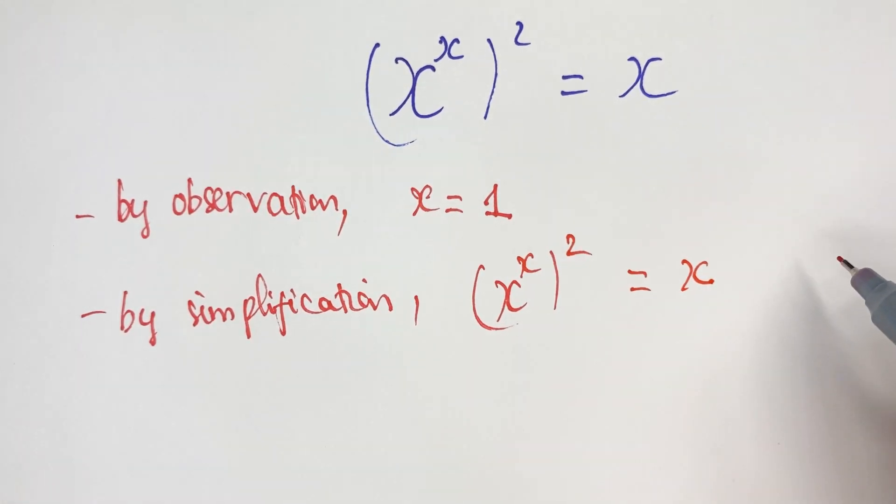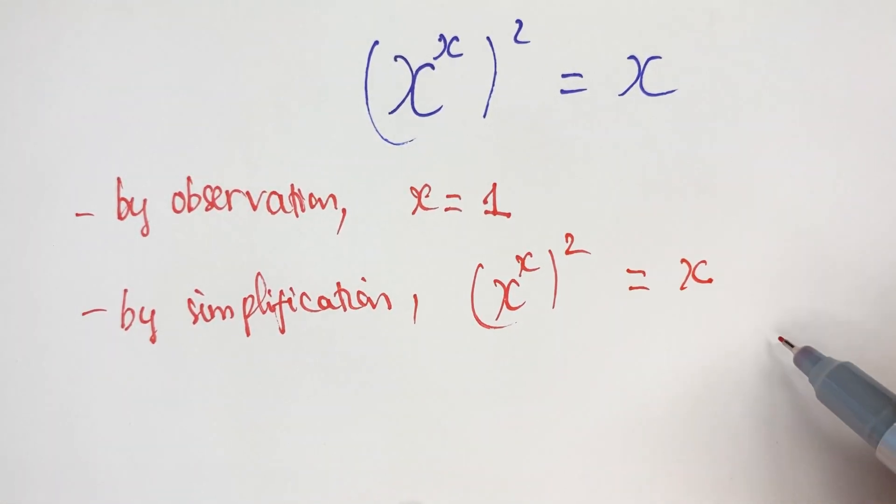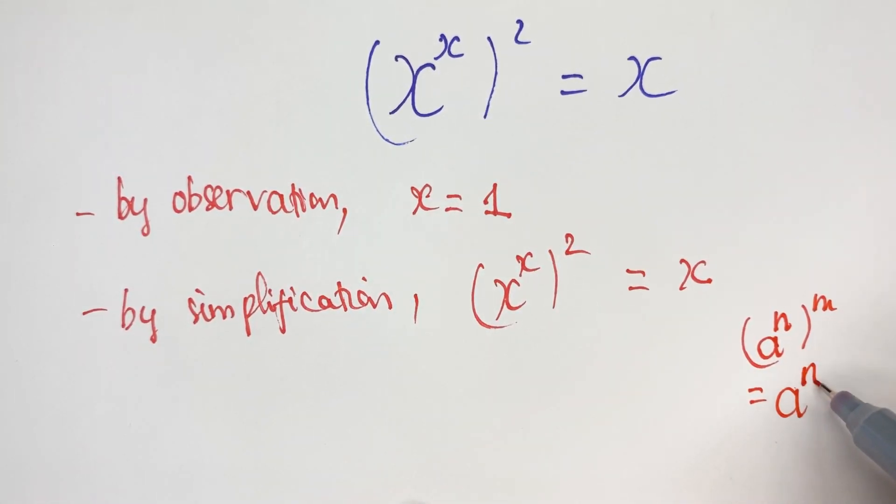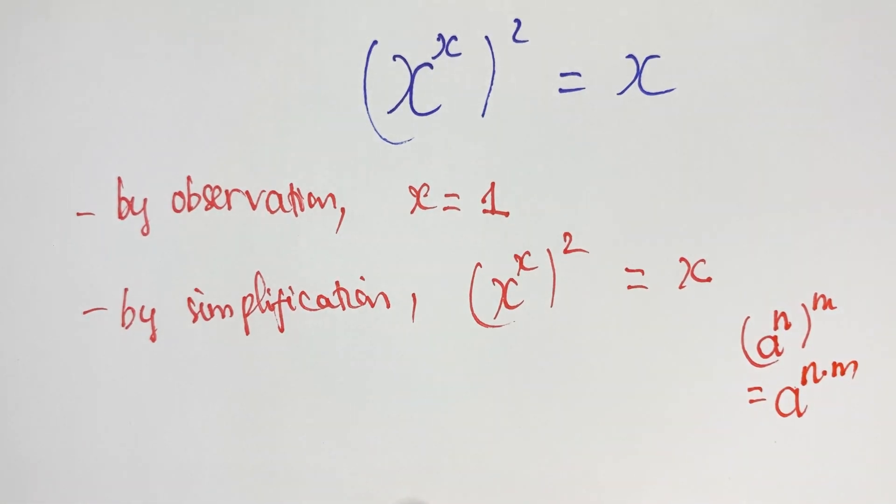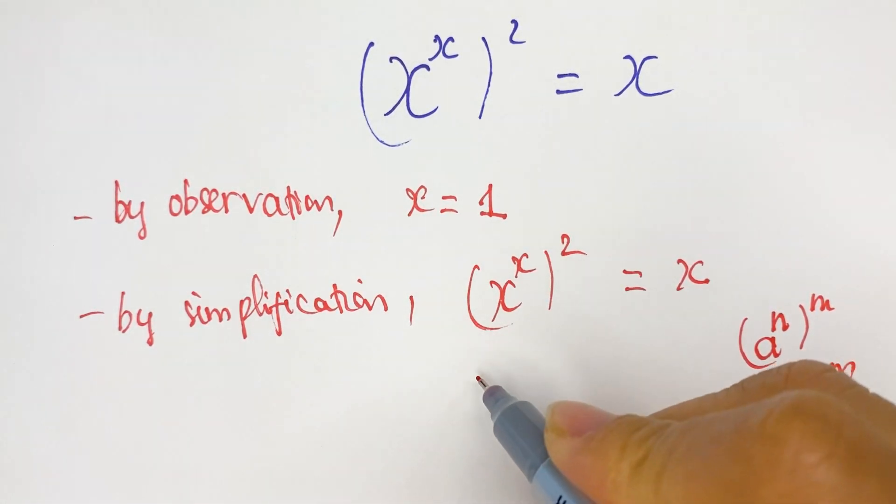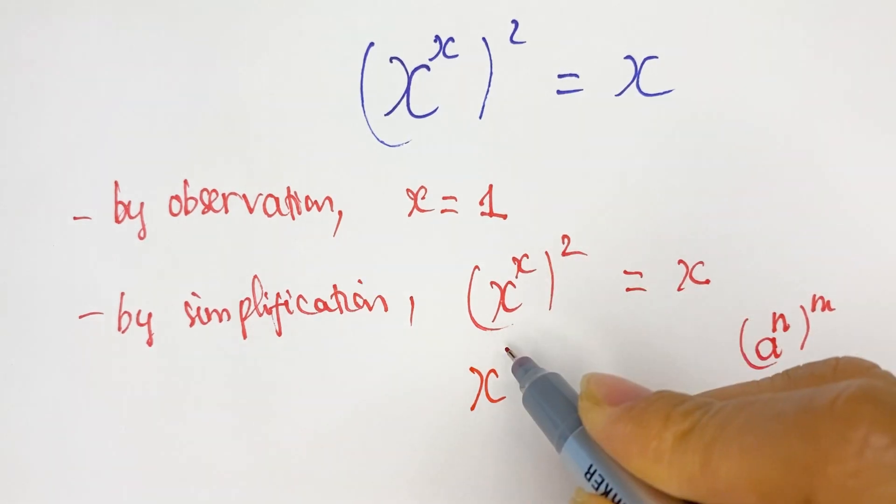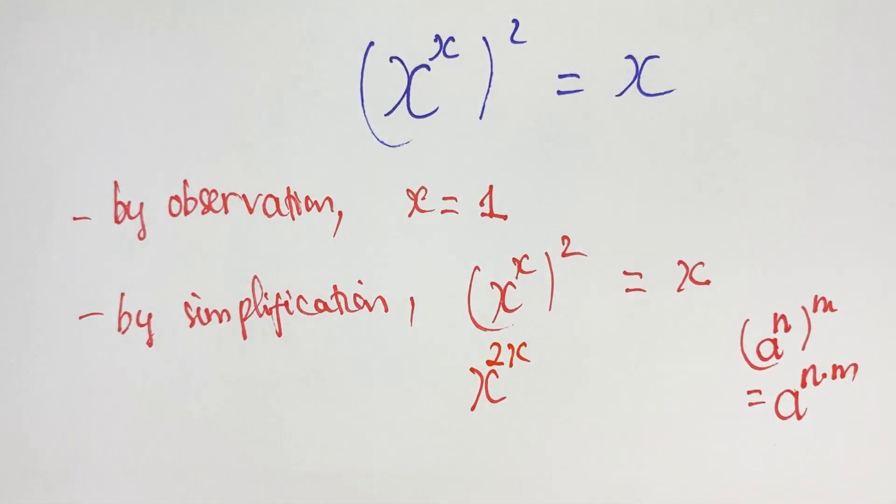So you can see the exponential rule we have: x^n power m equals x^(n times m). You can rewrite that as x^(x times 2), you can rewrite as x^(2x).